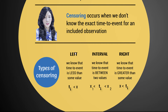Left censoring is when we know that the time to event is less than some particular value. So say we know that someone died within two years of getting cancer, but we don't know the exact time it took them. In that case we know it's less than two years but are unsure of the exact value — so it's called left censoring.